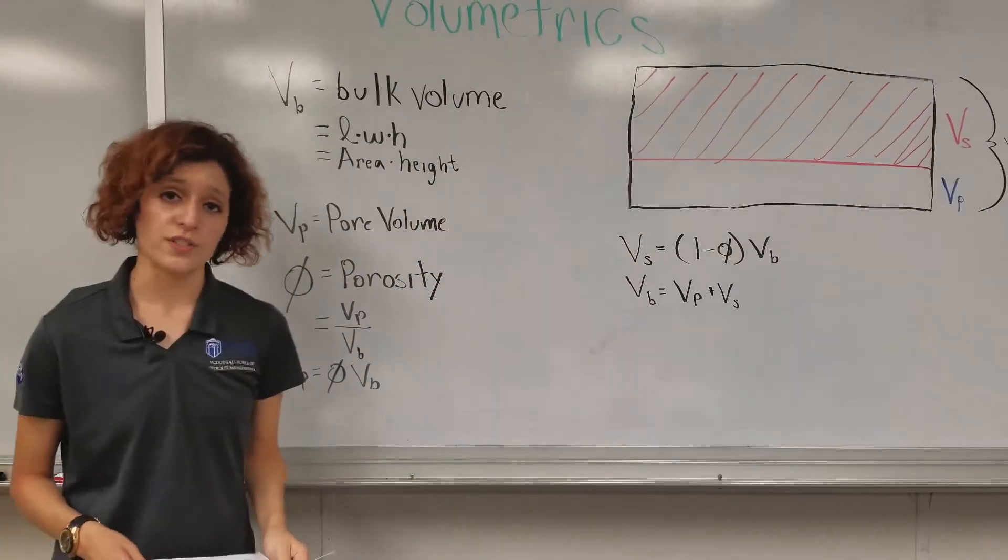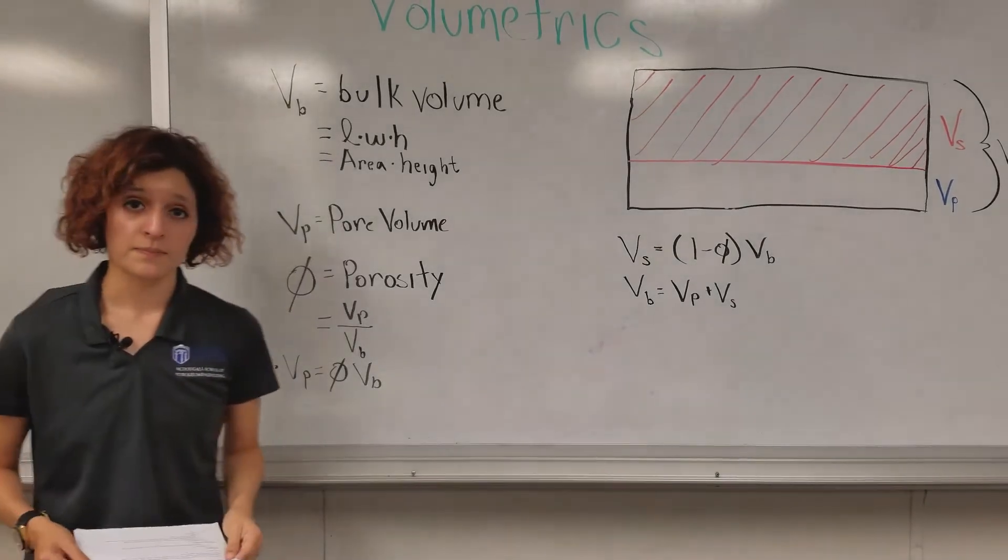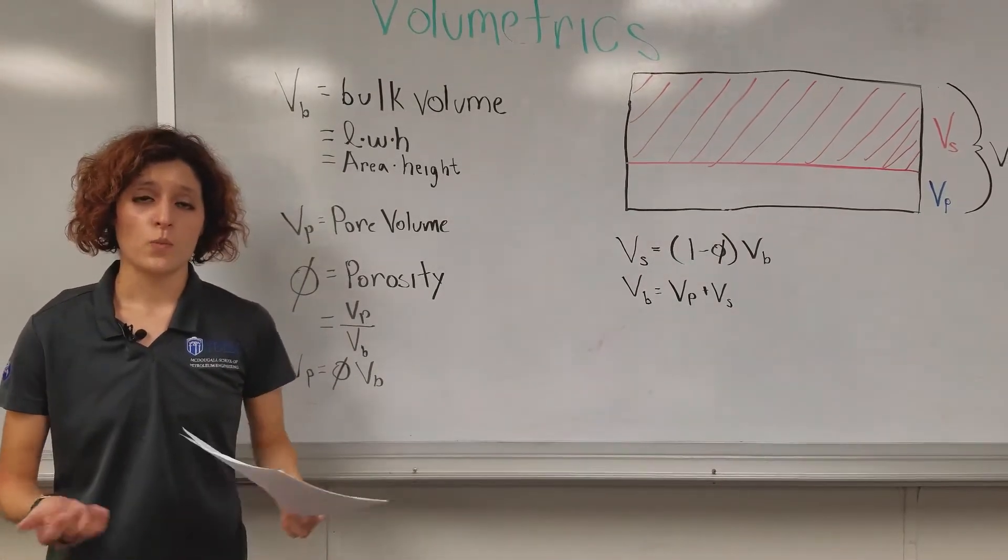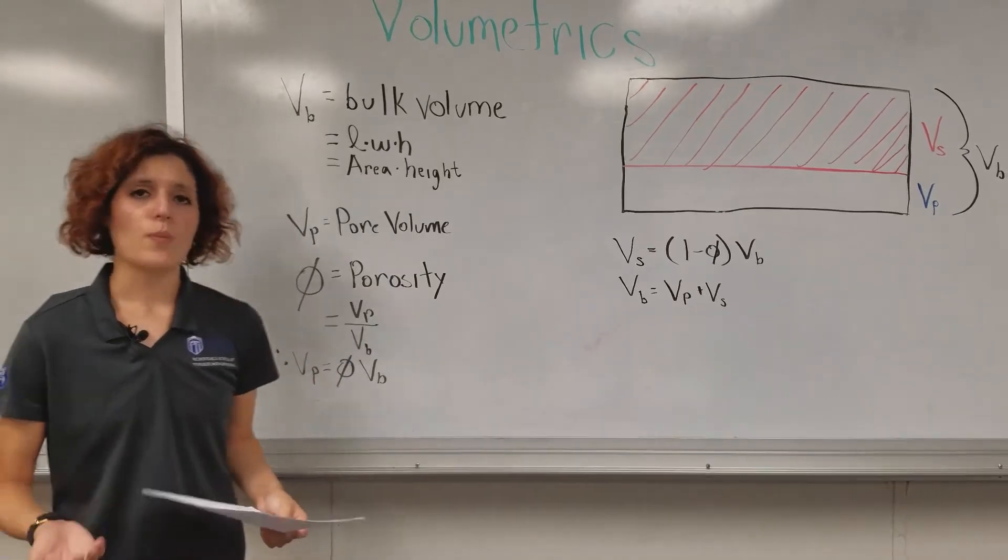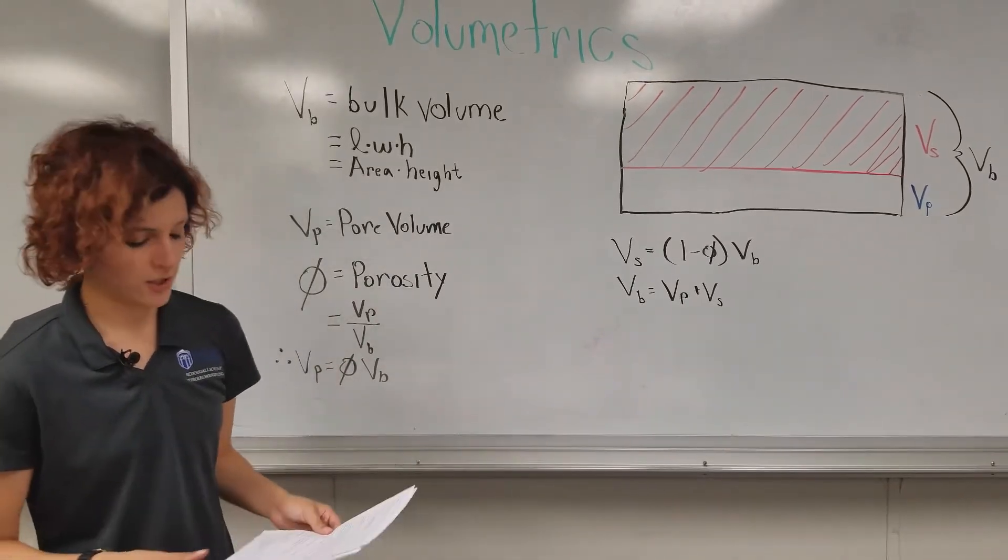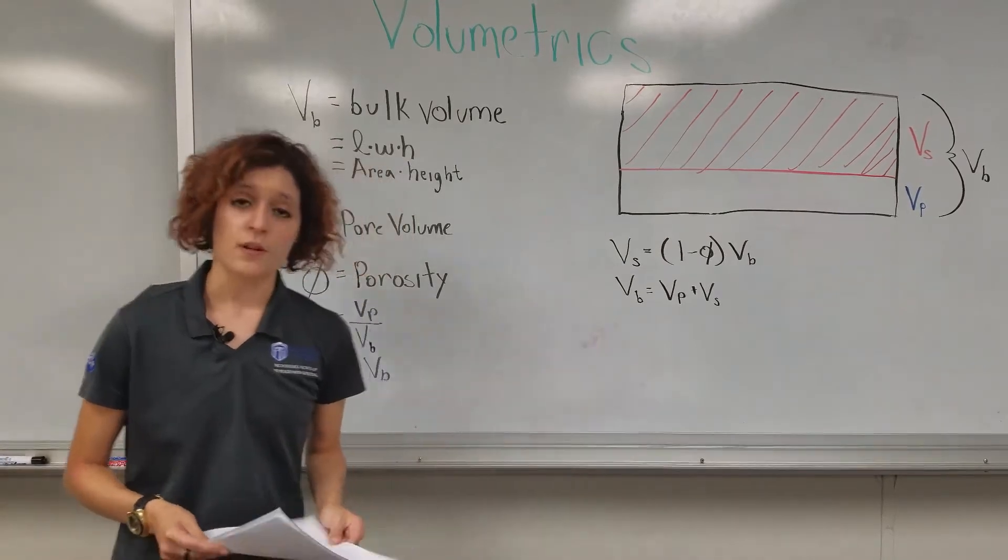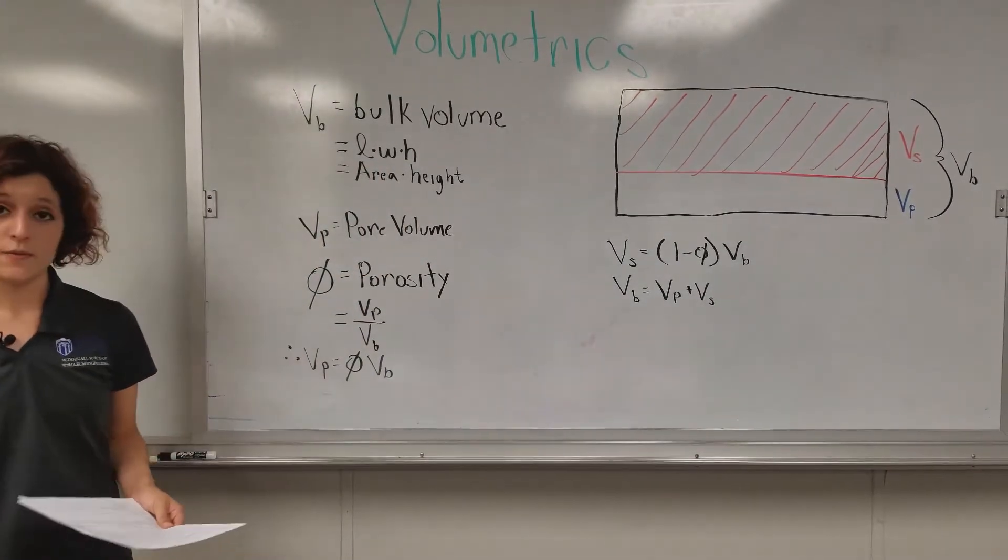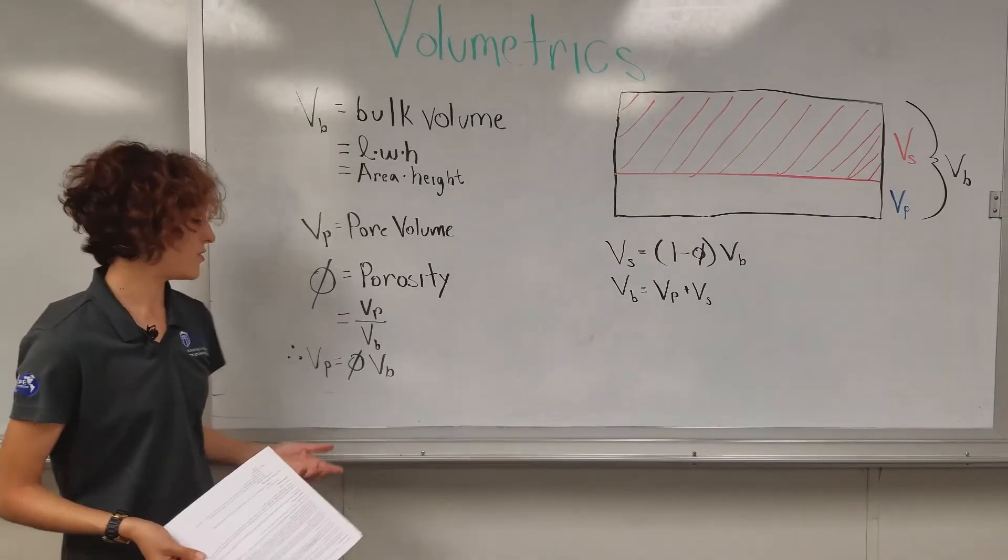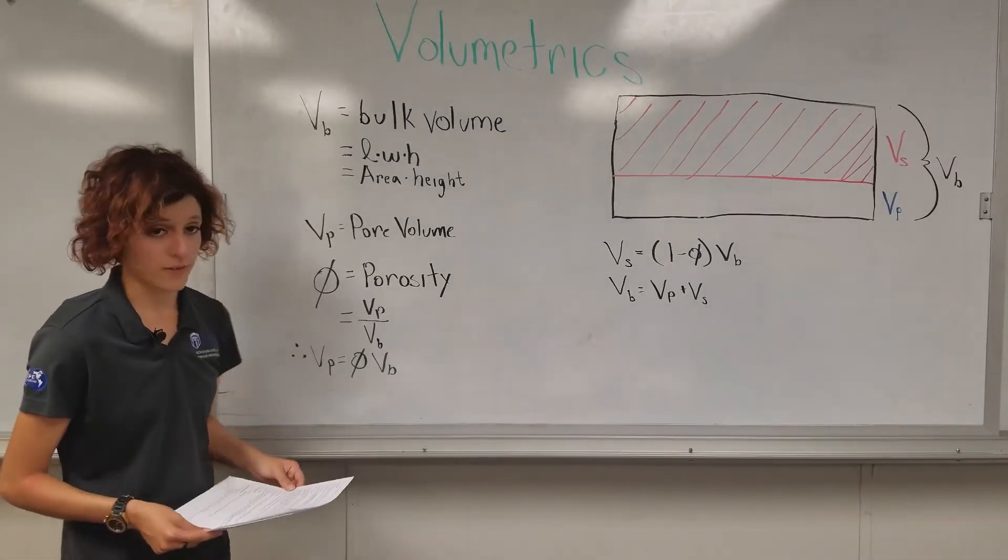Our pore volume we'll denote as V sub P. And porosity, we use the Greek letter phi. Now, all porosity really is, is just the ratio of our pore volume to our bulk volume. Therefore, our pore volume is just porosity times our bulk volume.